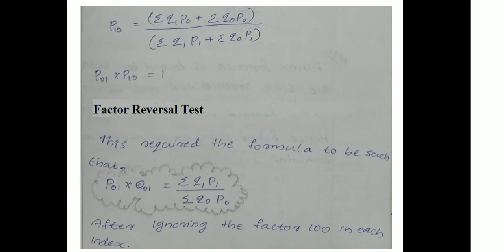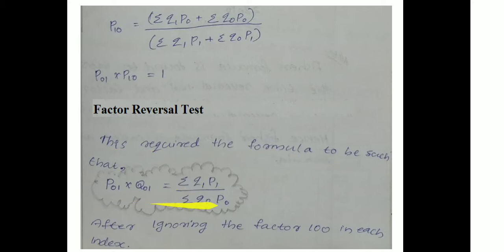Next, the factor reversal test. This requires the formula to be such that P01 into Q01 equals summation Q1·P1 divided by summation Q0·P0. That is, the price index number P01 multiplied by the quantity index number Q01 should equal summation Q1·P1 by summation Q0·P0, after ignoring the factor 100 in each index number.